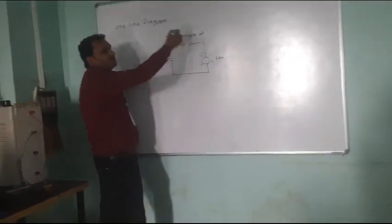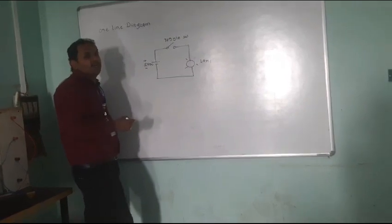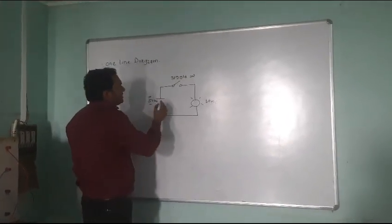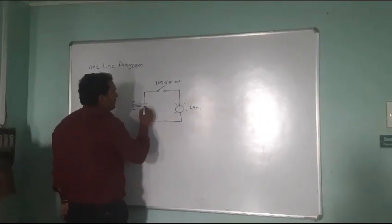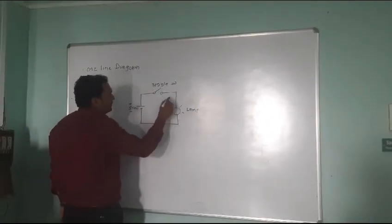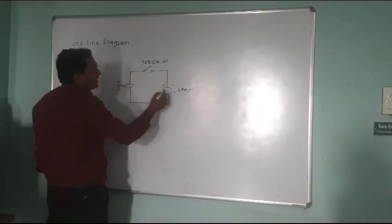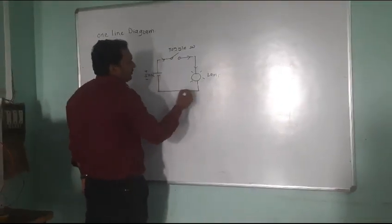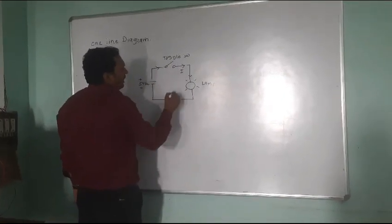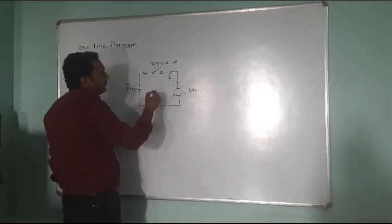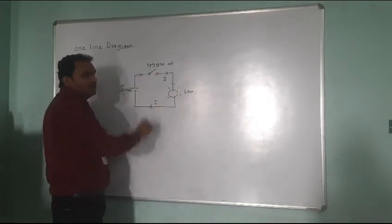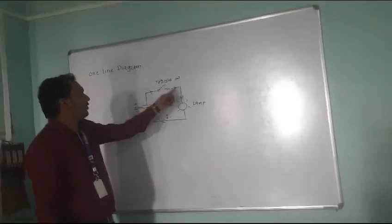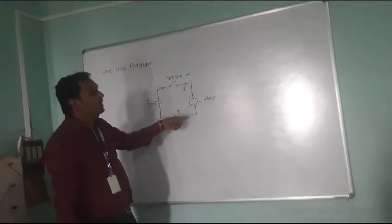Now, how to convert this circuit into a one line diagram — that is the question. You can see that the supply is connected in this way, the switch is here, and the lamp is here. The current is passing from this way. The lamp will be on after switching on this toggle switch, after passing the current from the supply to the lamp.